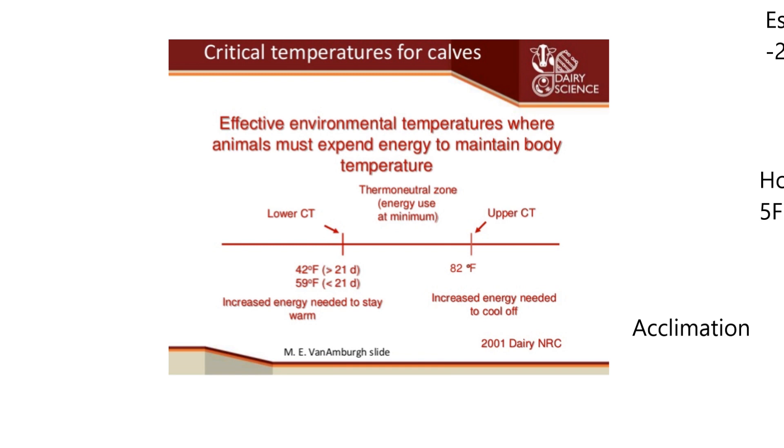Another thing that it depends on is acclimation. If an animal acclimates to its environment over time, it's going to change its lower critical temperature. So that's one thing you should be aware of - it's hard to put numbers here. But now, these people, for calves, they said that the lower critical temperature is like 59 degrees if the animal is less than 21 days of age. And then, once they get older than 21 days, it drops to 42 degrees. They're probably getting more body weight on them, I'm sure. And then the upper critical temperature happens to be 82 degrees. Beyond both of these ranges, you have to expend more energy. We already know that.